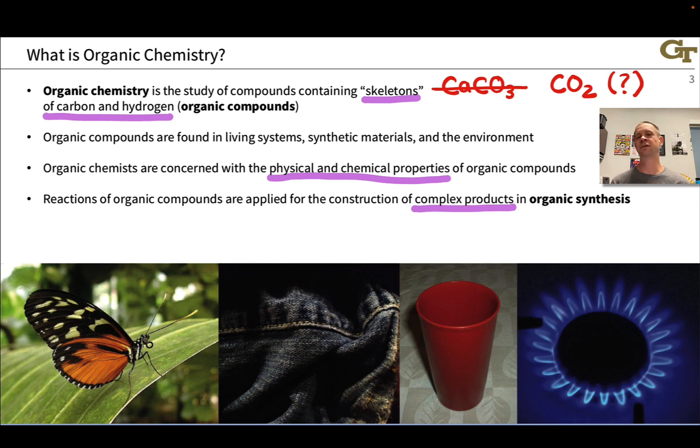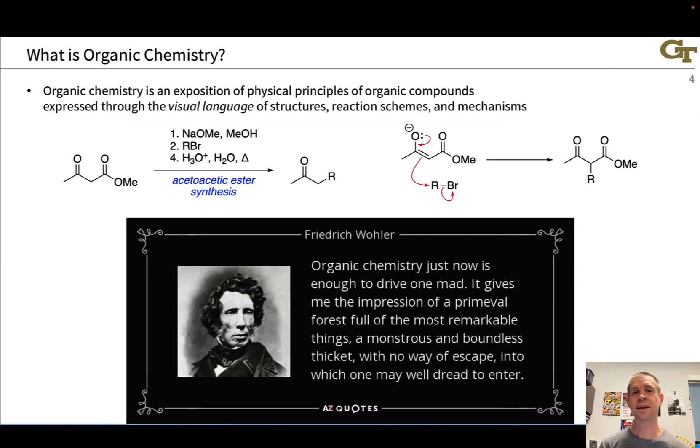And by combining different types of organic reactions together into multi-reaction sequences, we can start with simple starting materials and build up complex products. And this is the domain of what's called organic synthesis, whose goal is to create these complex products from simple starting materials using known organic reactions.